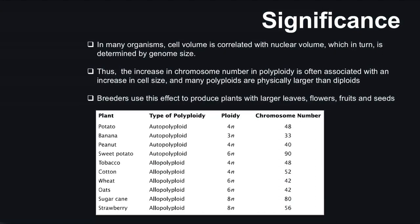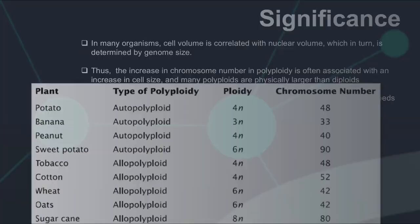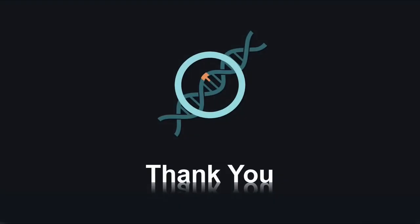This table shows many examples of autopolyploid and allopolyploid, such as potato and peanut. In the next video, we will discuss mutation — specifically point mutation at the DNA level. So far we have been studying chromosomal variation; next we will look at what mutations occur at the DNA level. I hope you all enjoyed the video. Thank you, take care.